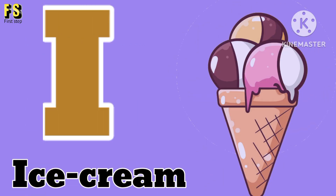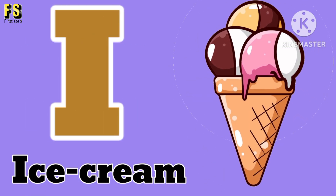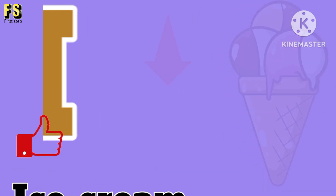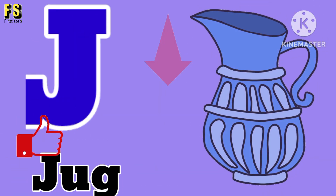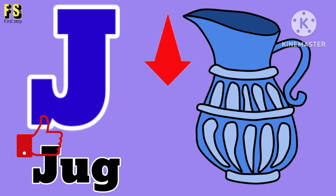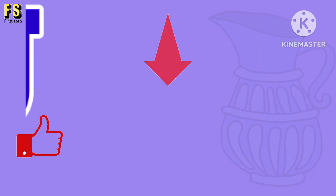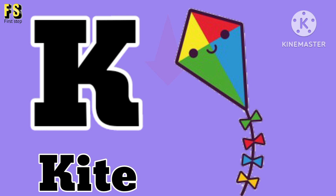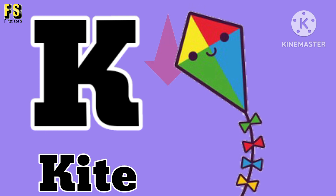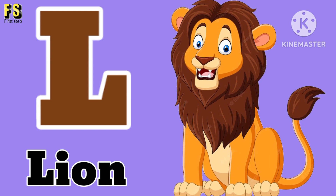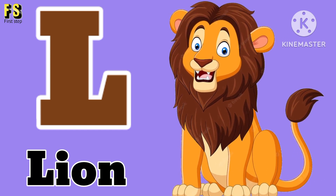I for ice cream, J for jug, K for kite, L for lion.